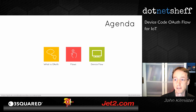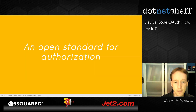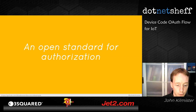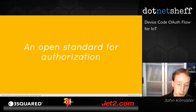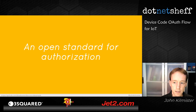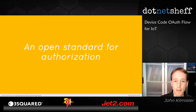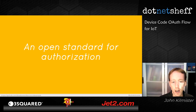OAuth is an open standard for authorization. Instead of using basic auth — passing a username and password as a header when making API requests — what we can do is go and get a token and use that token for all our API requests. The advantage of a token-based system is that we never need to worry about managing or handling the username or password from our end users.